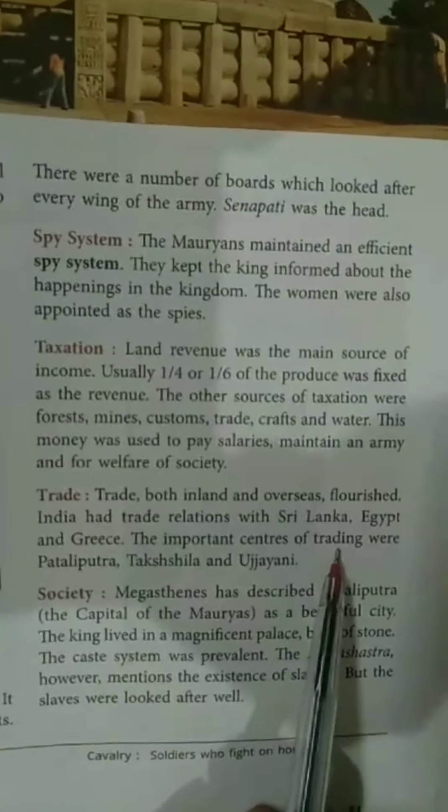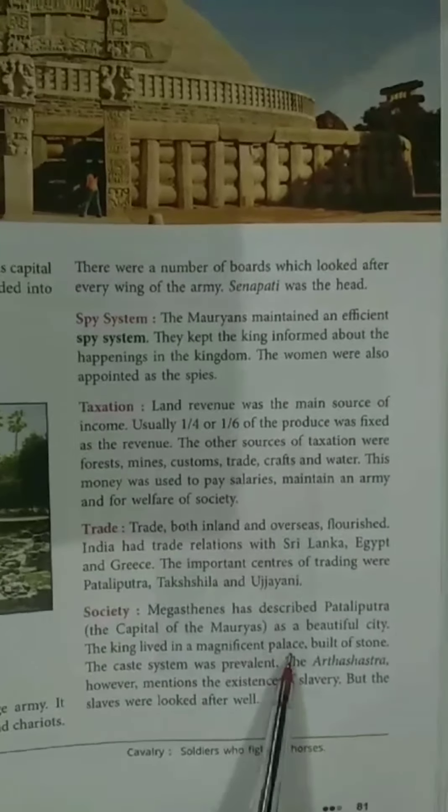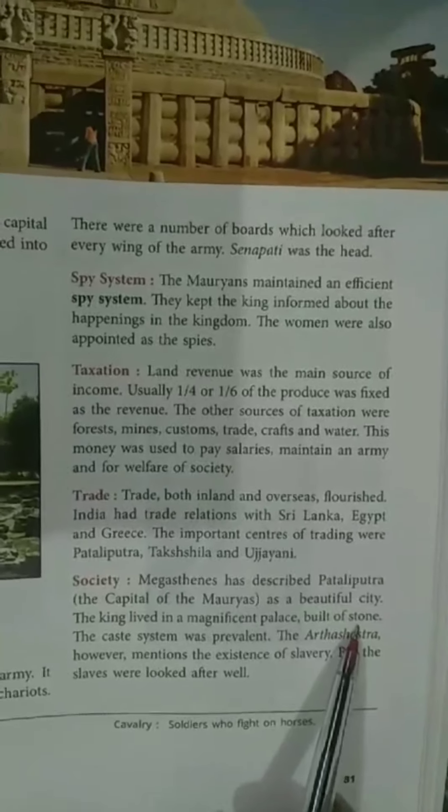Now let us study about the society. According to Megasthenes, who was one of the ambassadors sent by Seleucus, Patliputra, which was also the capital of the Mauryan Empire, was a very beautiful city. The king lived in a very big palace which was made up of stone.